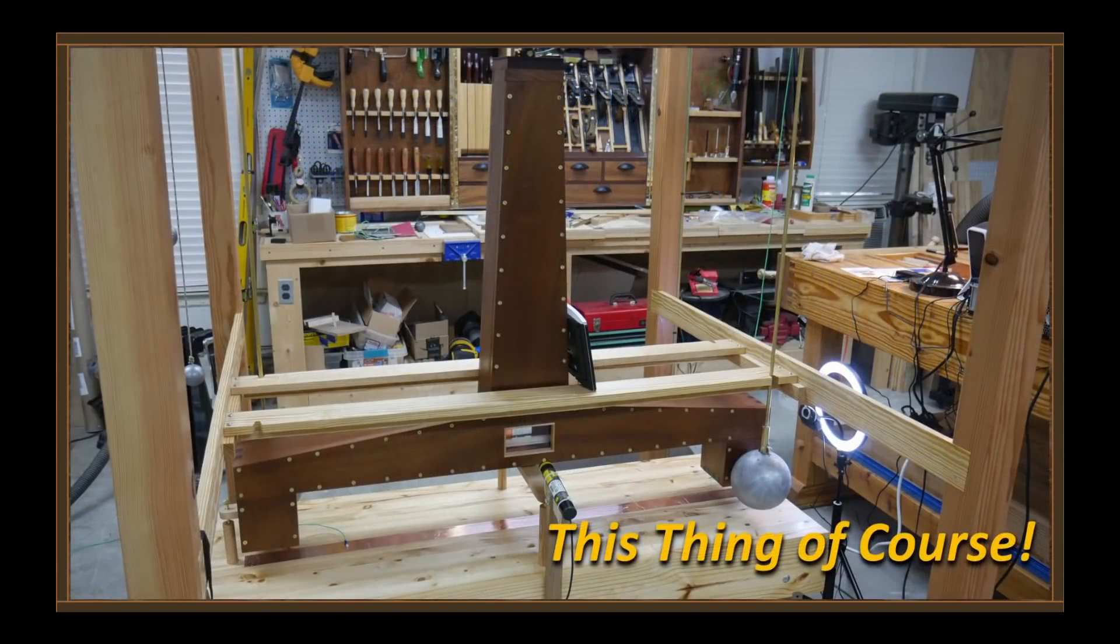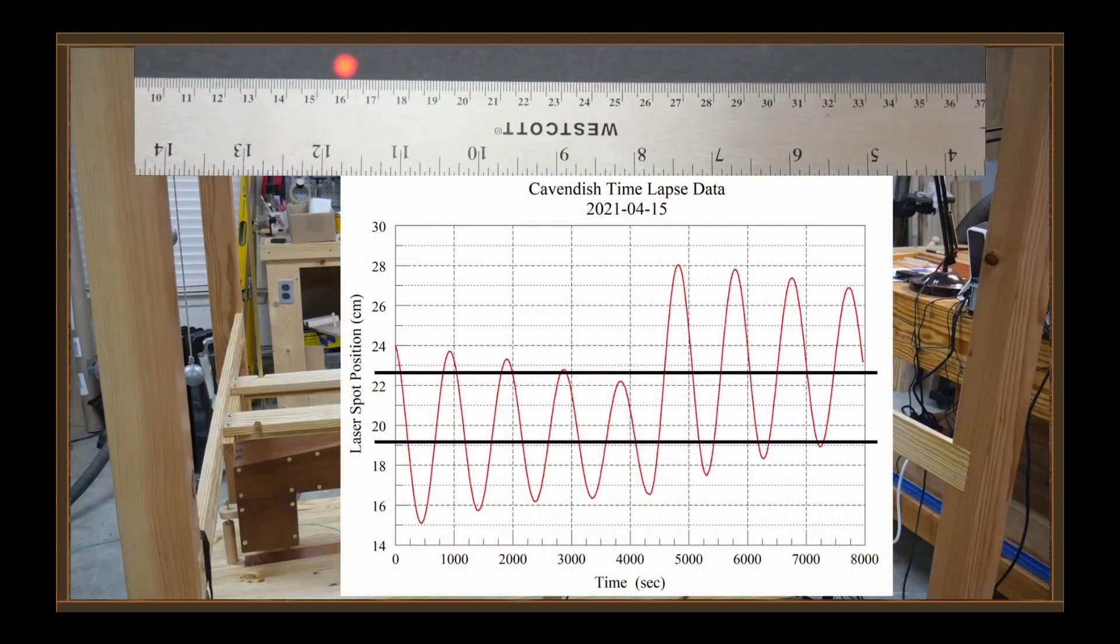This is the Cavendish experiment, and not only does it show the unmistakable attraction of mass to other mass, it also gives us a great way to measure accurately the universal gravitational constant. I mean, it's undeniable. When you watch what happens when those masses are moved in close proximity to one another, it shows up just like this on this graph, and you can see it real time. Every time we run it. 100% of the time.